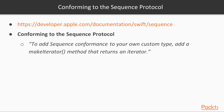Now let's look at adopting Sequence onto our linked list type. Our first stop when learning about a new protocol is, as usual, the developer documentation for the Sequence protocol. Under the section 'Conforming to the Sequence Protocol', we find the following guidance: to add sequence conformance to your custom type, add a make iterator method that returns an iterator. Our next stop is to look at the signature of the make iterator method — we need to return a value of type Self.Iterator.